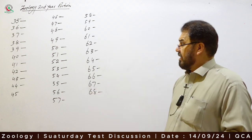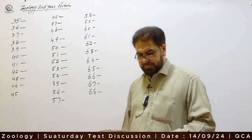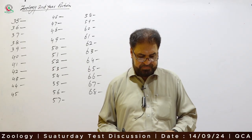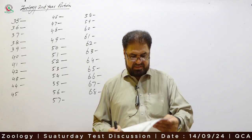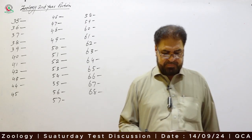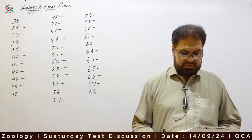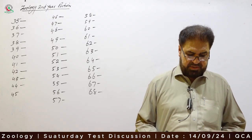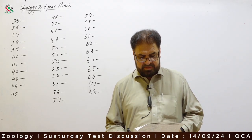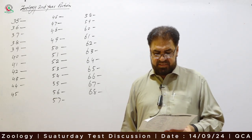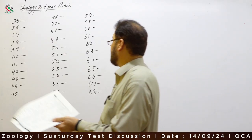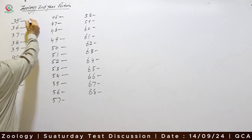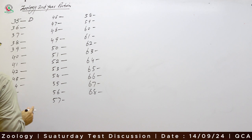Bismillah ar-Rahman ar-Rahim. Biology part 2, Question number 35: Nose is composed of — Option 1: bone, Option 2: cartilage, Option 3: fibro fatty tissue. The correct answer is all of these, because all are part of the nose. Option D is the correct answer.